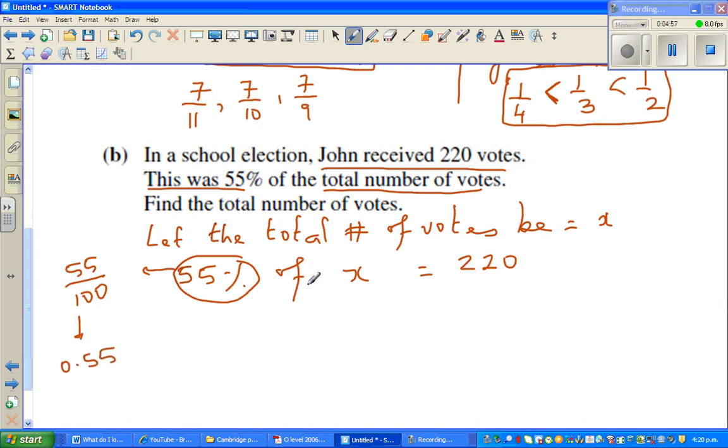Now 55% is 55 out of 100, which is 0.55. So off, I would say, it's good to remember off as times. So this is 0.55 times x. You could have written, say, instead of x, you could have written v, v for votes. So let me change that to, let the total number of votes be v. So 55% of v is, so times v is equal to 220.